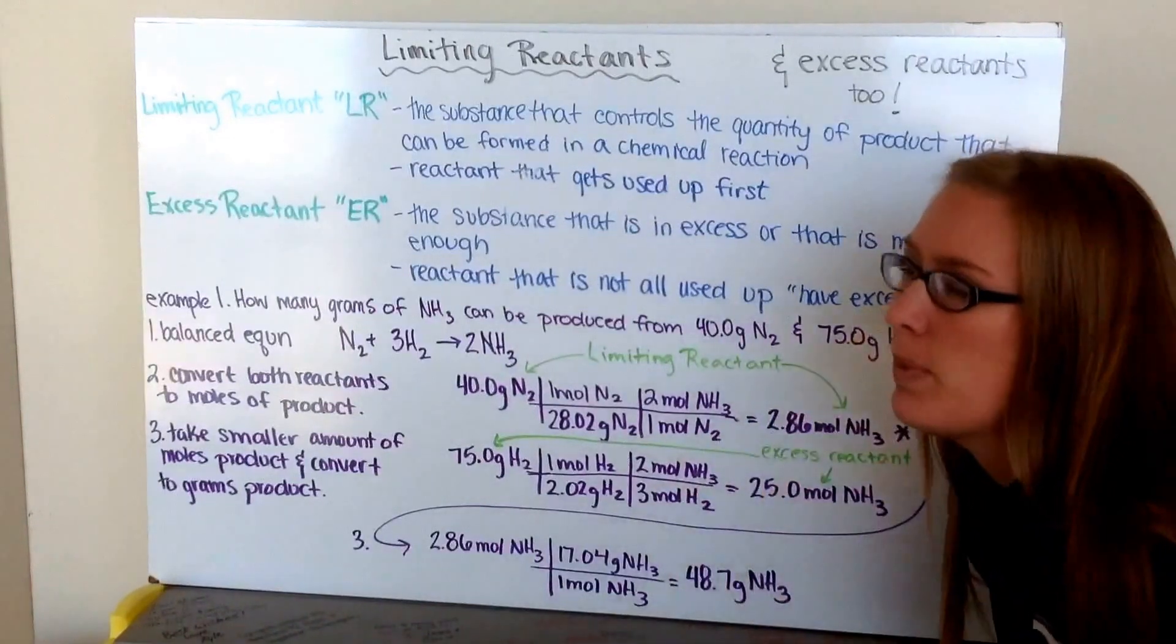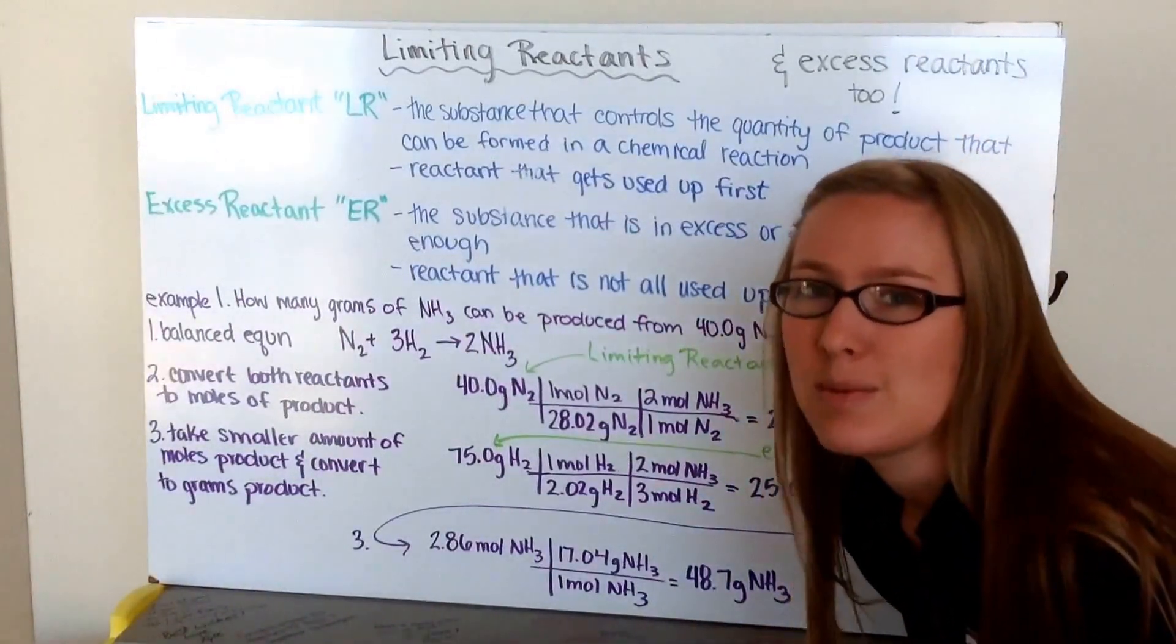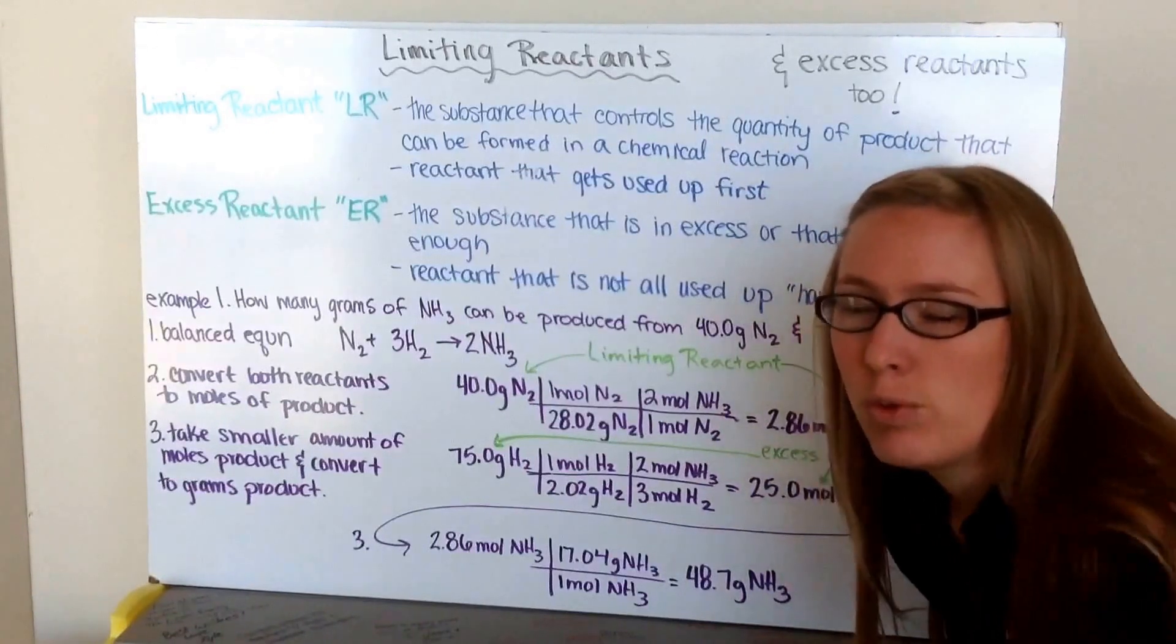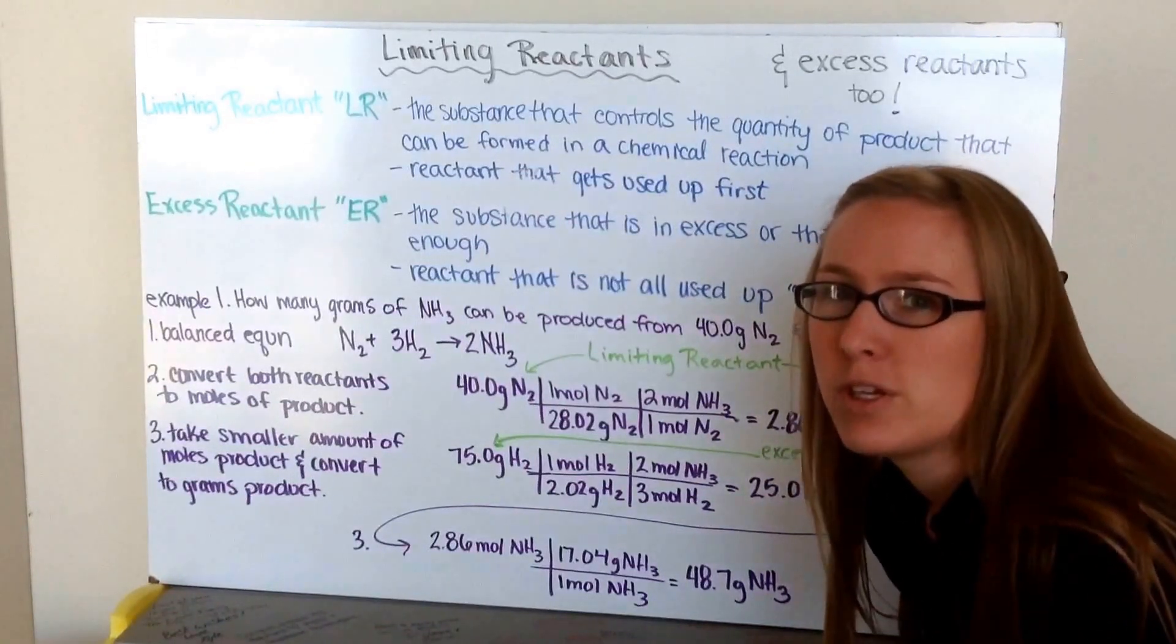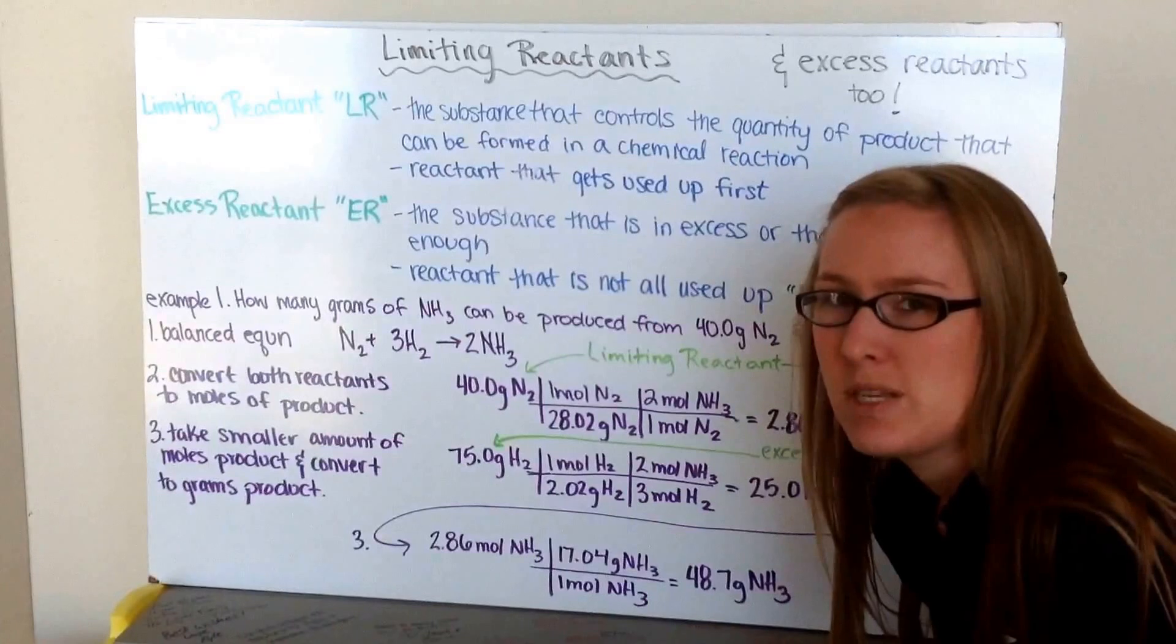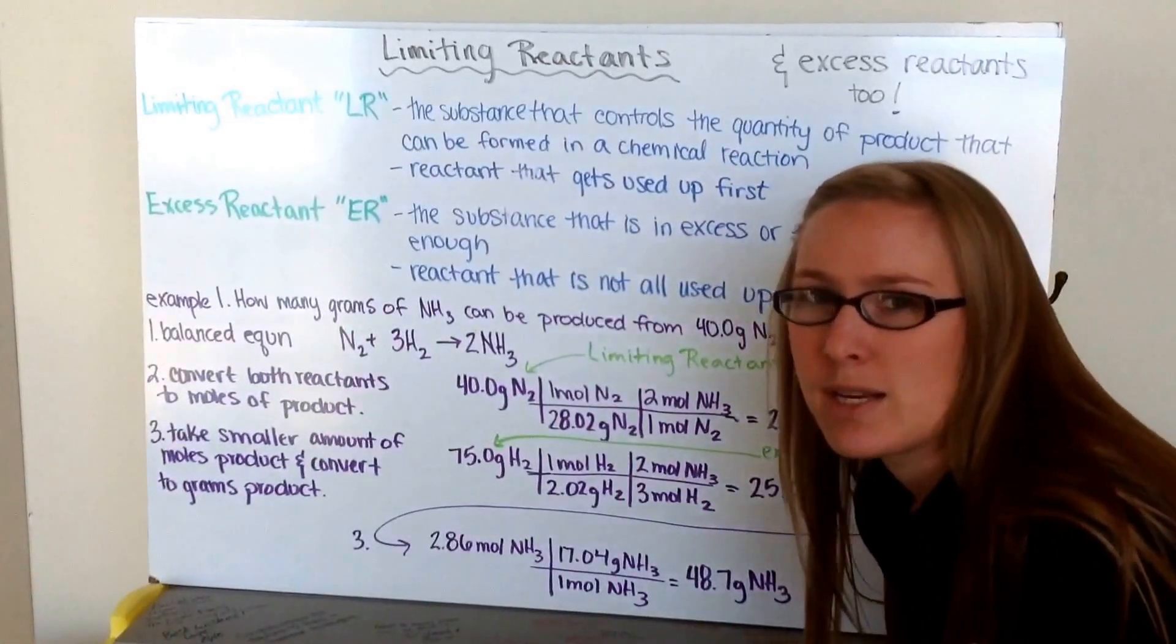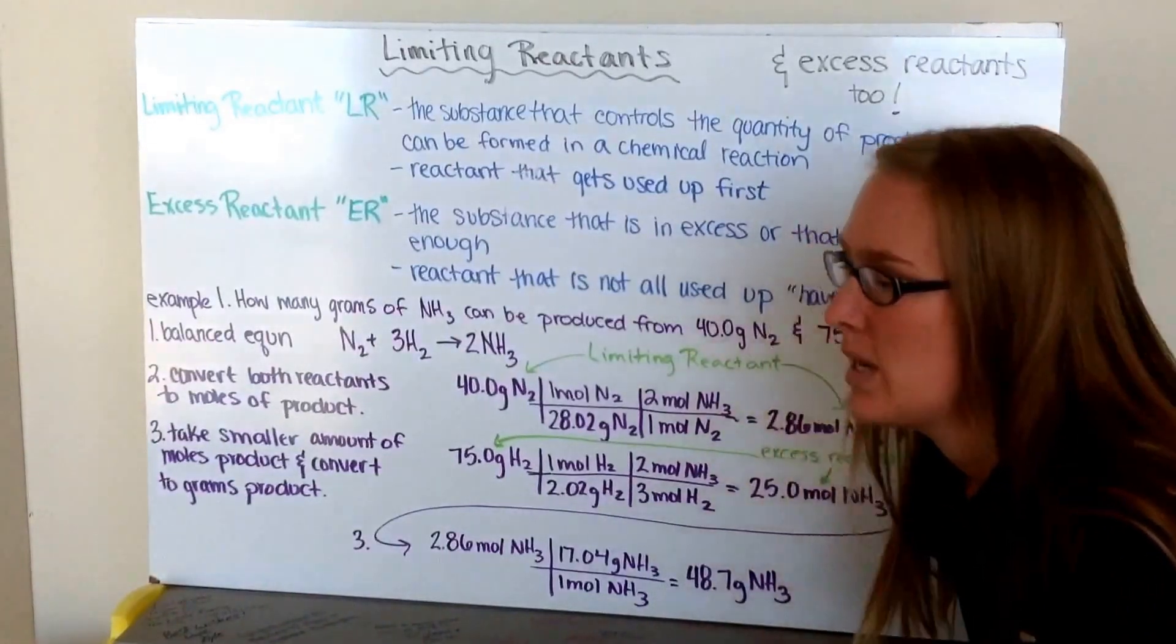It would be like if you were making a peanut butter and jelly sandwich, you only had a tablespoon of peanut butter but you had three tablespoons of jelly. But when you make your sandwich, you're probably only going to use enough jelly to compensate with that peanut butter. Therefore, you might have excess jelly left over. This would be your excess reactant whereas your peanut butter would be your limiting reactant.